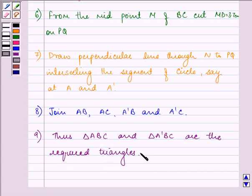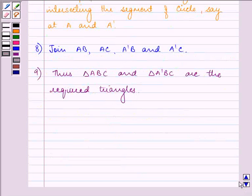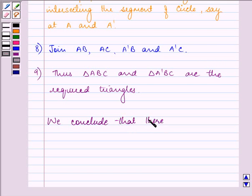And one thing more was asked from us in the question, we were asked how many such triangles are possible. So we can see here we have drawn two triangles ABC and A dash BC. So we conclude that there can be two such triangles.